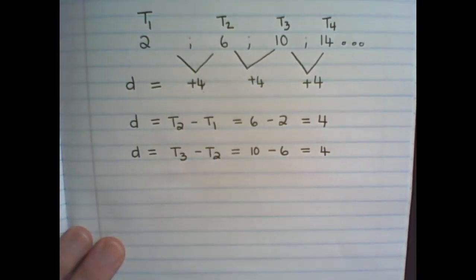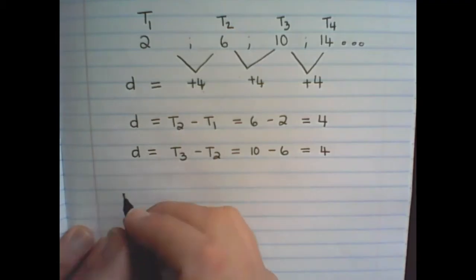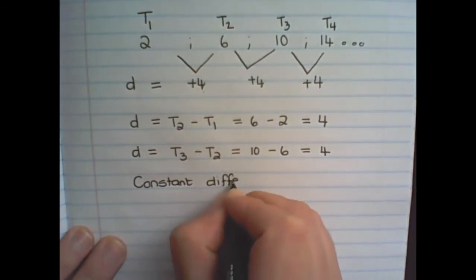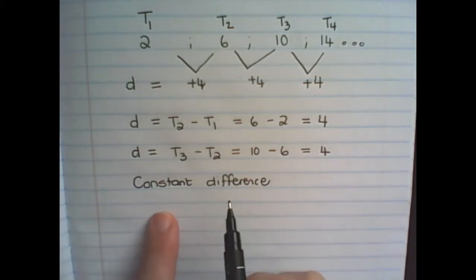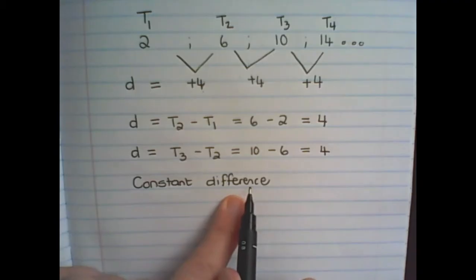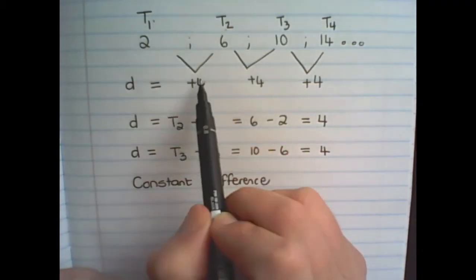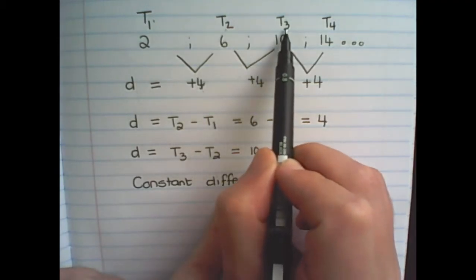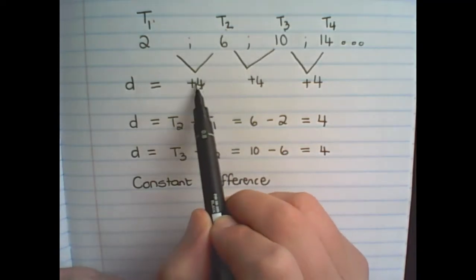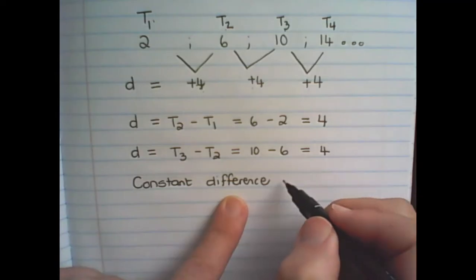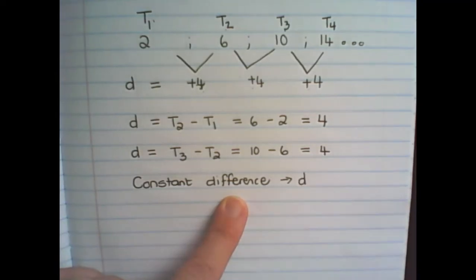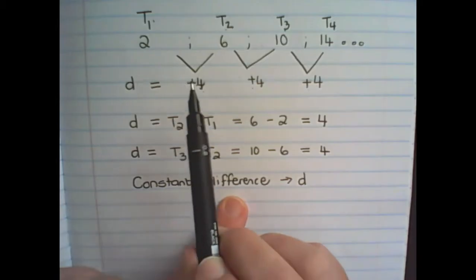And that is the main property of a linear number pattern. It has a constant difference between terms. So what it means to say that it has a constant difference is that the difference between Term 2 and Term 1 is 4, and it's the same as the difference between Term 3 and Term 2. And this, then, is called a constant difference. That is our main property or characteristic of a linear number pattern. This value doesn't have to be positive, it can be a negative constant value as well, or it can be a fraction or a decimal.